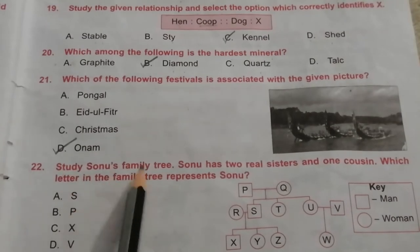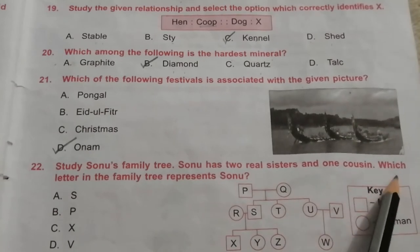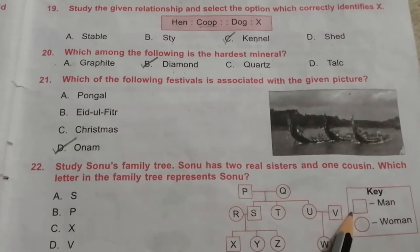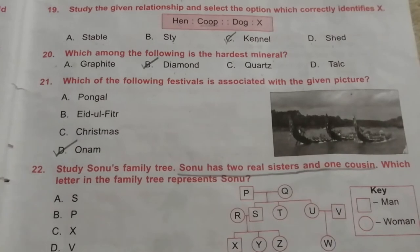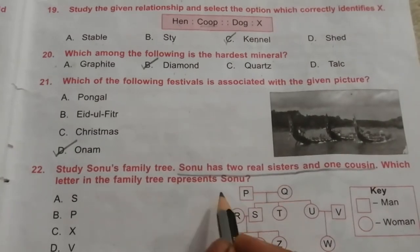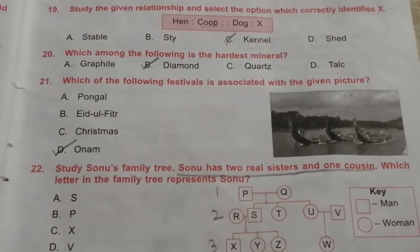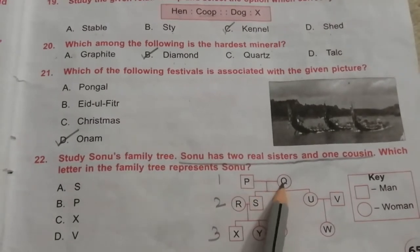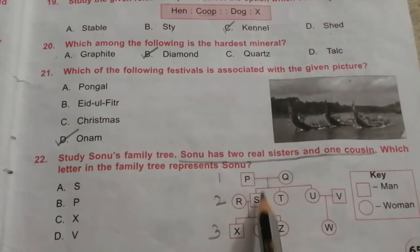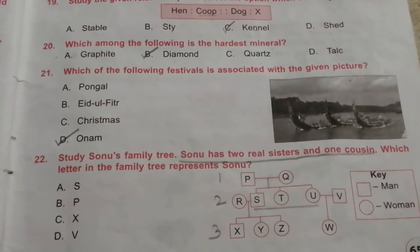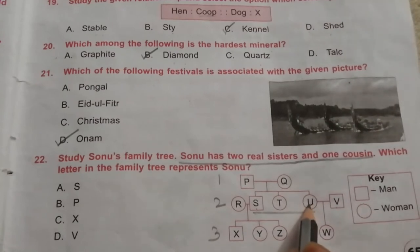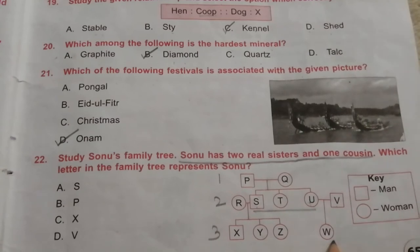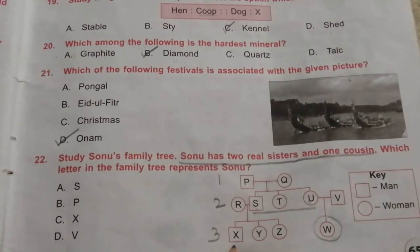Question 22: Study Sonu's family tree. Sonu has two real sisters and one cousin. Which letter in the family tree represents Sonu? Squares represent men and circles represent women. In the family tree: P and Q are parents (first generation), second generation has siblings — one boy, two girls — and their spouses S, U and V. In the third generation, W is the cousin and X is the boy. So Sonu is X. The answer is C: X.